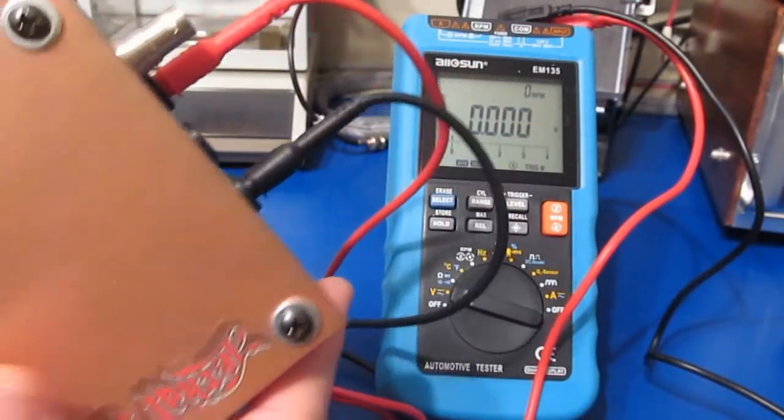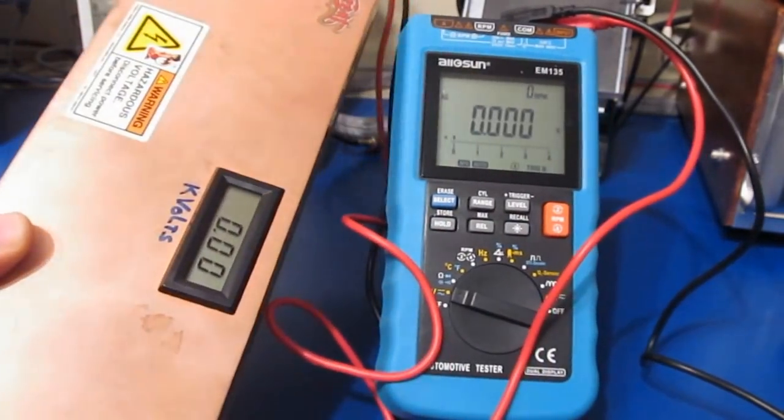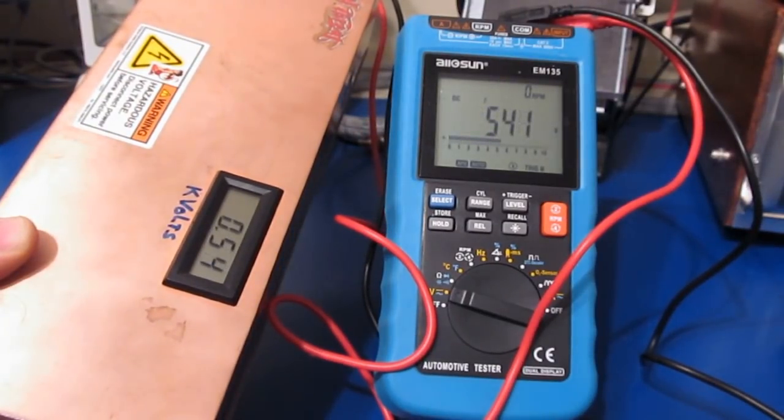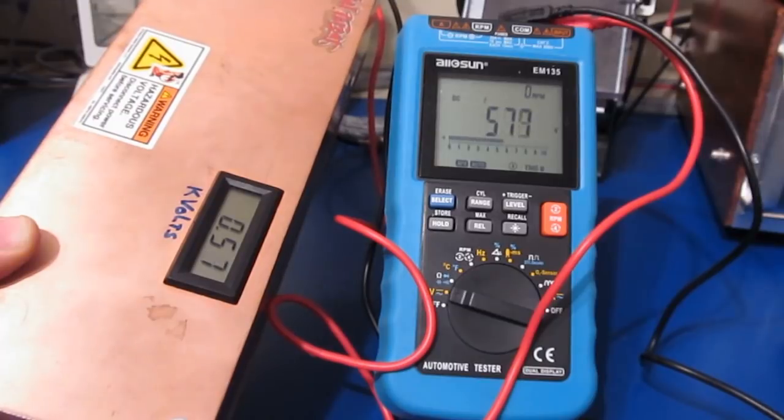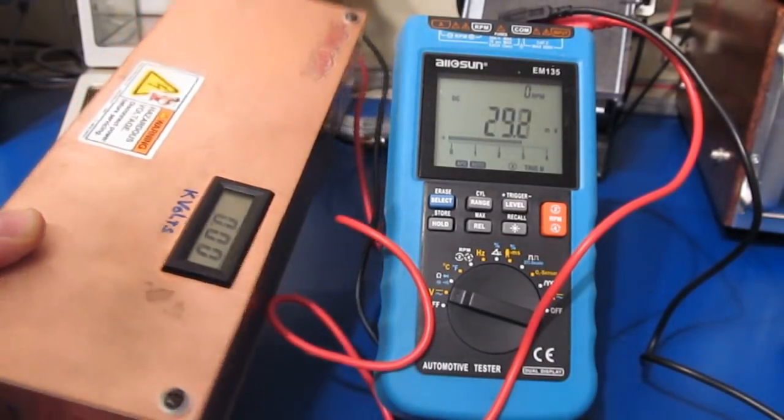The ESD generator is connected to the meter's DC output. Turning it up to verify the meter can still reach the maximum 600 volts shows it erroring out right at 600, which appears fine.